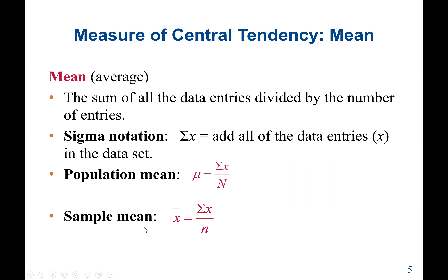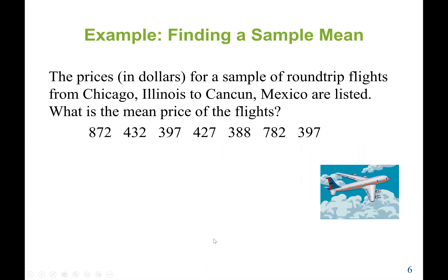To find the sample mean, it would be X-bar, which is equal to the sum of all the data entries divided by the sample size. The sample size is represented as lowercase n. Let's see an example: we should find the sample mean for prices in dollars for a sample of round-trip flights from Chicago, Illinois to Cancun, Mexico. What is the mean price of the flights?